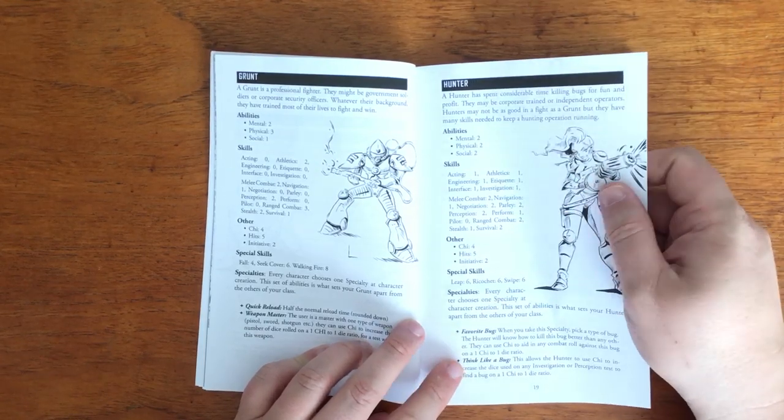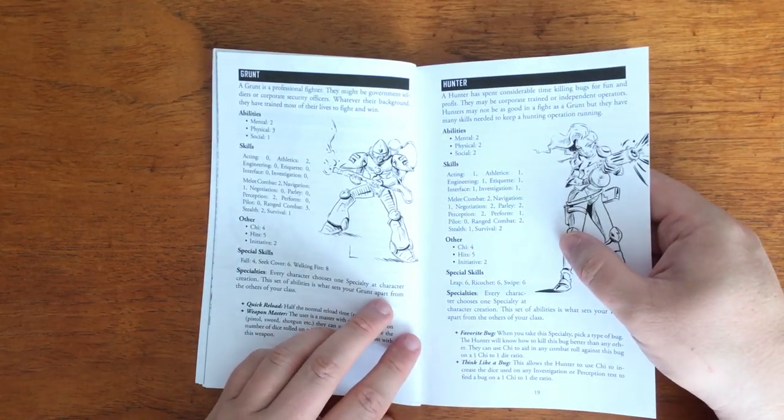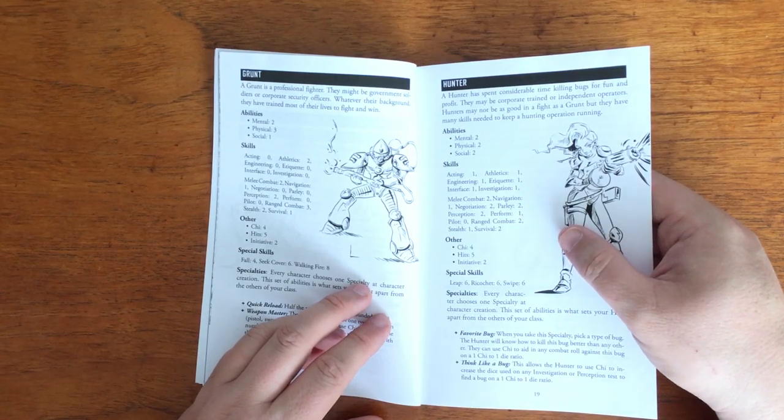Each class has a base set of stats, a list of skills, special skills, other and specialities of which they can choose one at character creation.